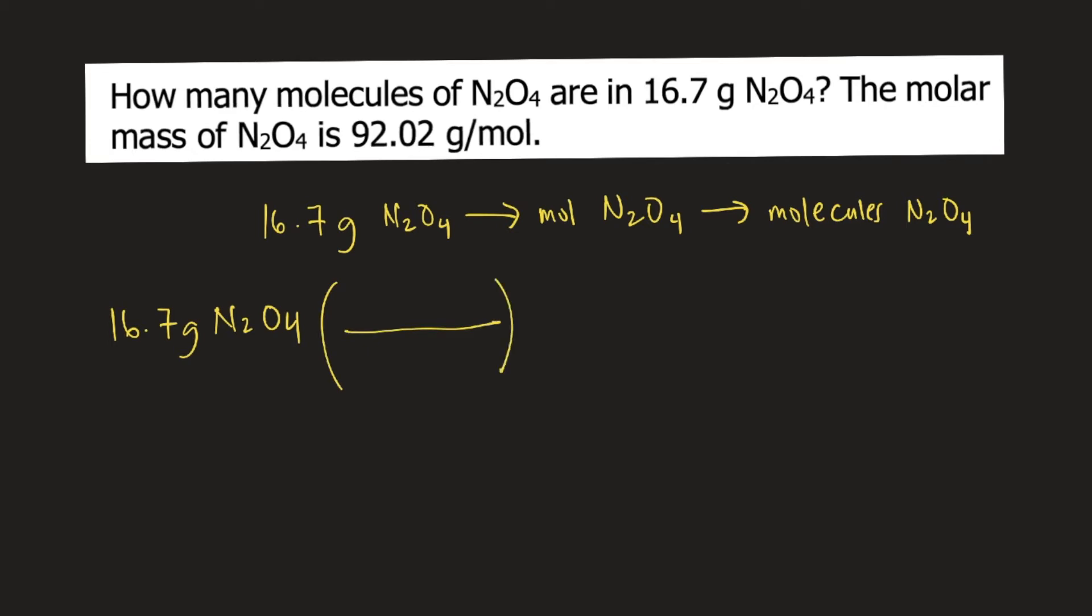In order to convert this into moles of N2O4, we need to use the molar mass. And according to the problem, the molar mass is 92.02 grams per mole. That means that for every one mole of N2O4, it weighs 92.02 grams. So grams of N2O4 would cancel. We now have moles of N2O4.